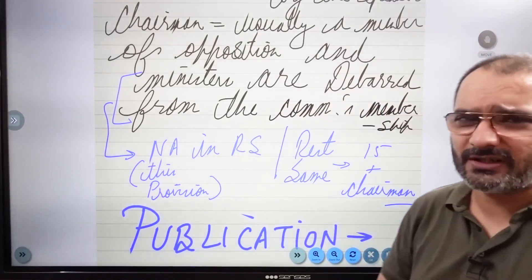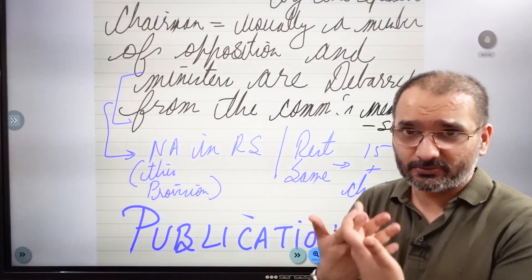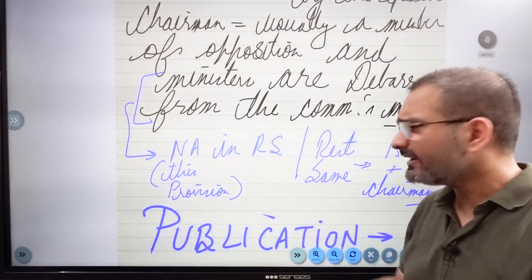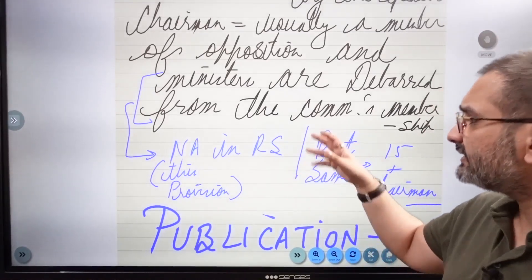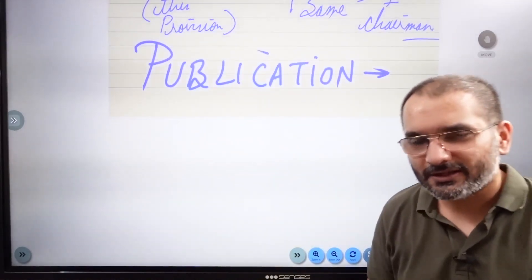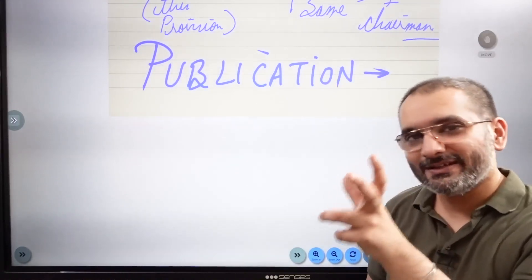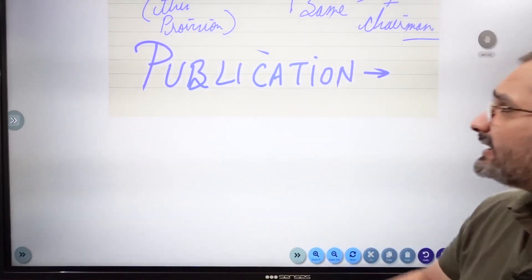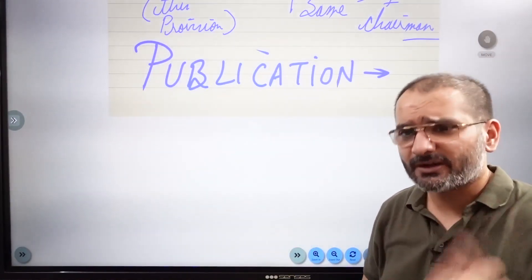Why are ministers barred from the Lok Sabha committee? Because a minister would effectively vote to approve delegated legislation — since in effect, the executive is getting all that power, ministers want more and more power. If they are put on the committee, they will approve rather than provide critical feedback. That is why they are removed. In Rajya Sabha, however, the minister can be a member. Primarily, the House of the People — Lok Sabha — is the key legislature, and Rajya Sabha's committee has comparatively less influence. The Rajya Sabha committee is also a 15-member committee, with members appointed by the Chairman.